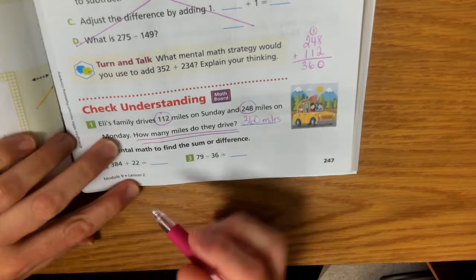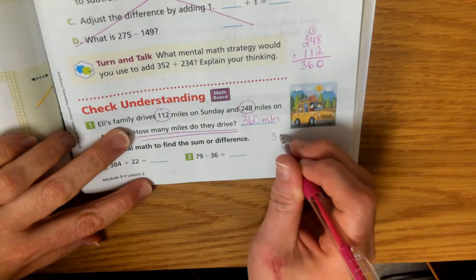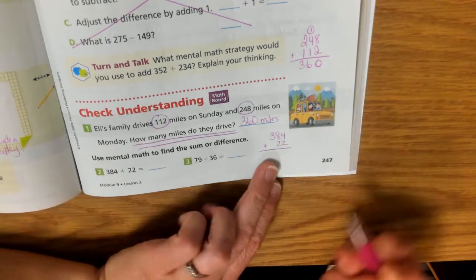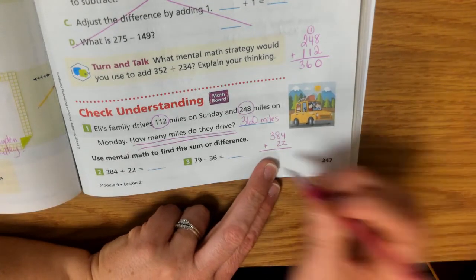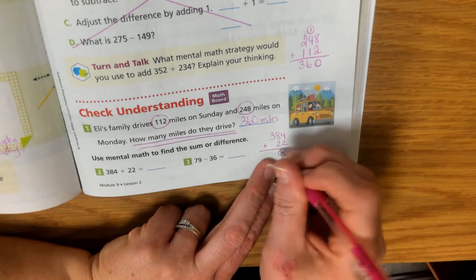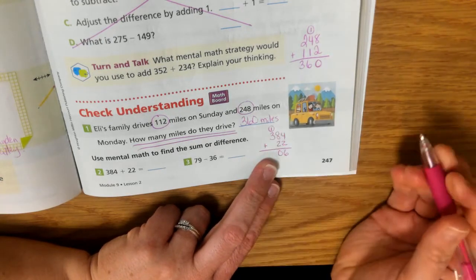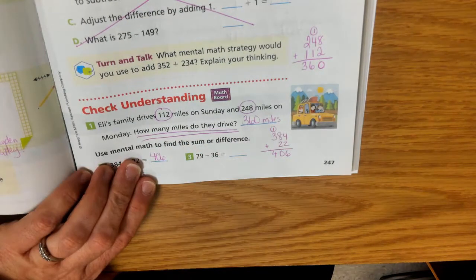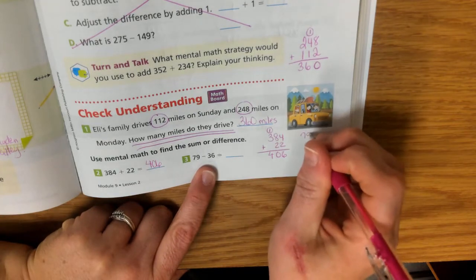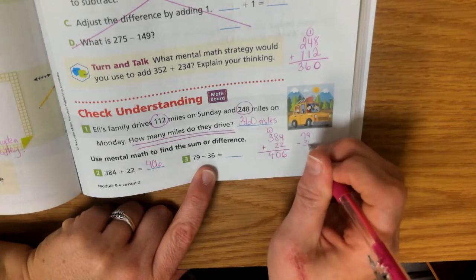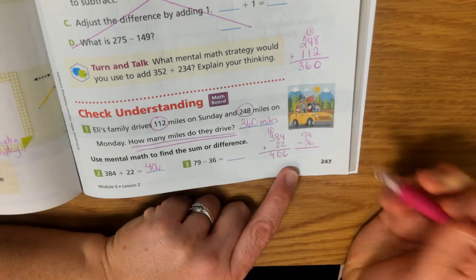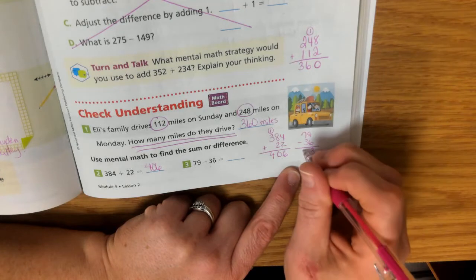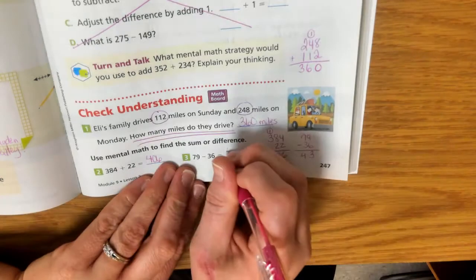Okay, we're going to add down here. I'm actually going to write it over here. 384 plus 22. 4 plus 2 is 6. 8 plus 2 is 10. Regroup a 1. 1 plus 3 is 4. 406. And then 79 minus 36. 9 minus 6, our top number is bigger so we're good. 9 minus 6 is 3. 7 minus 3 is 4. So we have 43.